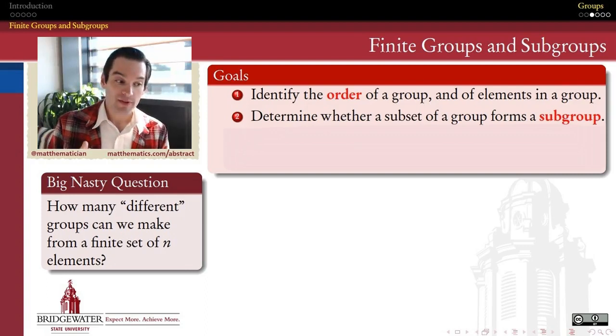We're also going to be able to take a look at a subset of a group, just a few of the elements within that group, and ask whether that subset has enough of the group properties in its own right to form what we can call a subgroup. So this will be a smaller group within a group, if you like.